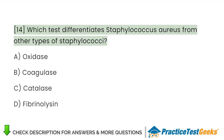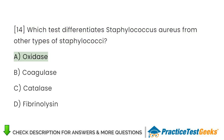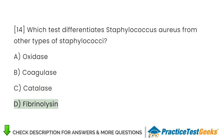Which test differentiates Staphylococcus aureus from other types of Staphylococci? A. Oxidase. B. Coagulase. C. Catalase. D. Fibrinolysin.